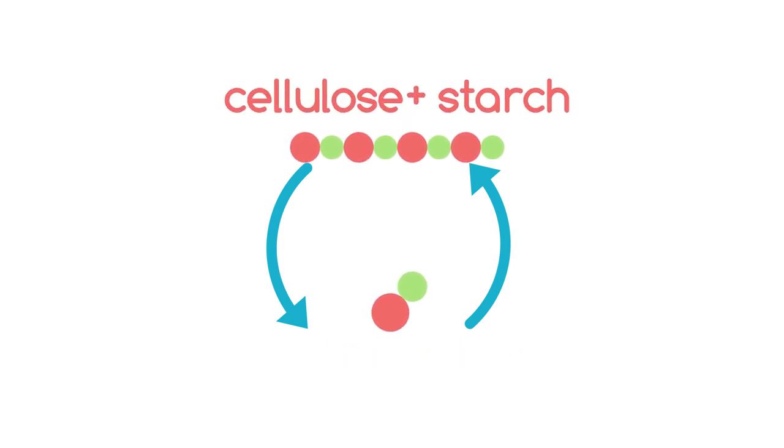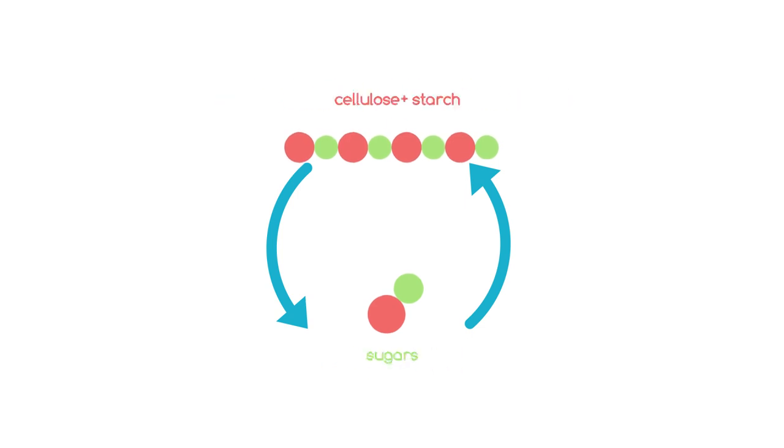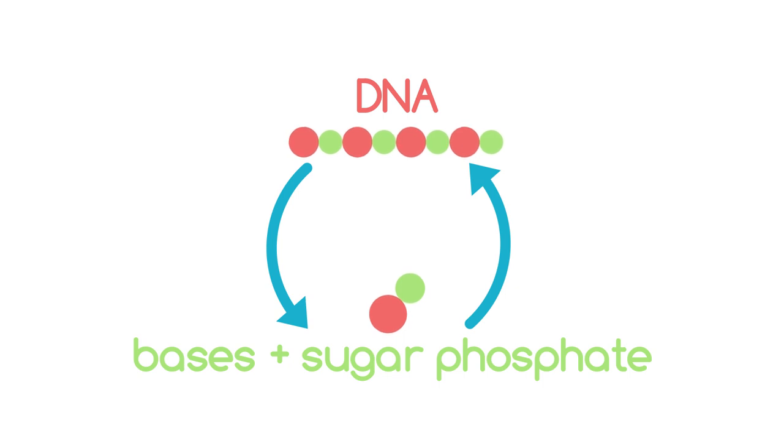Cellulose and starch to make the leaves, flowers, trunks, roots and all parts of plants, from joining sugars. And DNA to make the genes which control living things from the bases and the sugar and phosphate.